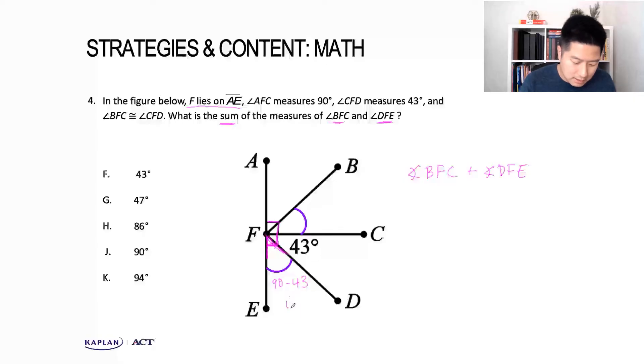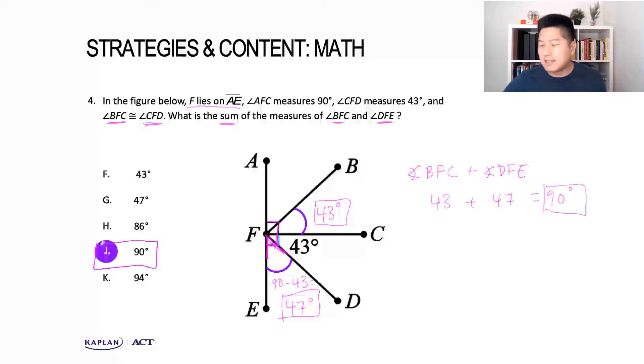If we do this math, it's 47 degrees. And then we know from the problem that angle BFC, the other angle we're looking for, is congruent to angle CFD. So if CFD is 43 and BFC is 43, they're equal. Now we have the two angle measures we need to sum up to get to our answer. We know that 43 plus 47 is equal to 90. That's our answer, answer choice J.